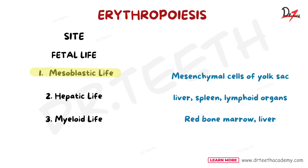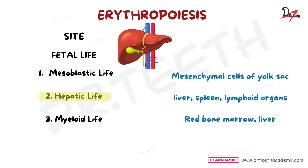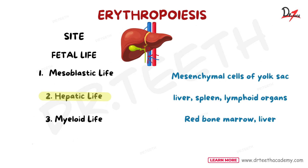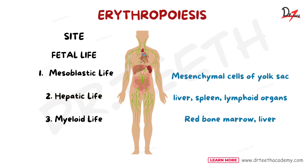Then we come to the hepatic stage — hepatic refers to the liver. In this stage, the liver is the main organ producing RBCs, and this is during the second trimester of pregnancy. RBCs are produced mainly from the liver, with some also produced from the spleen and lymphoid organs.